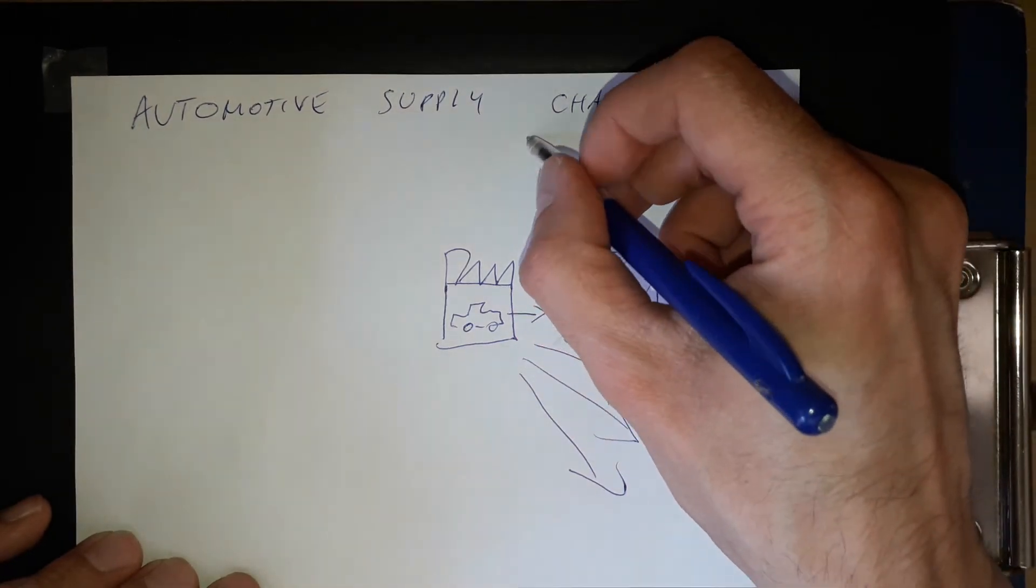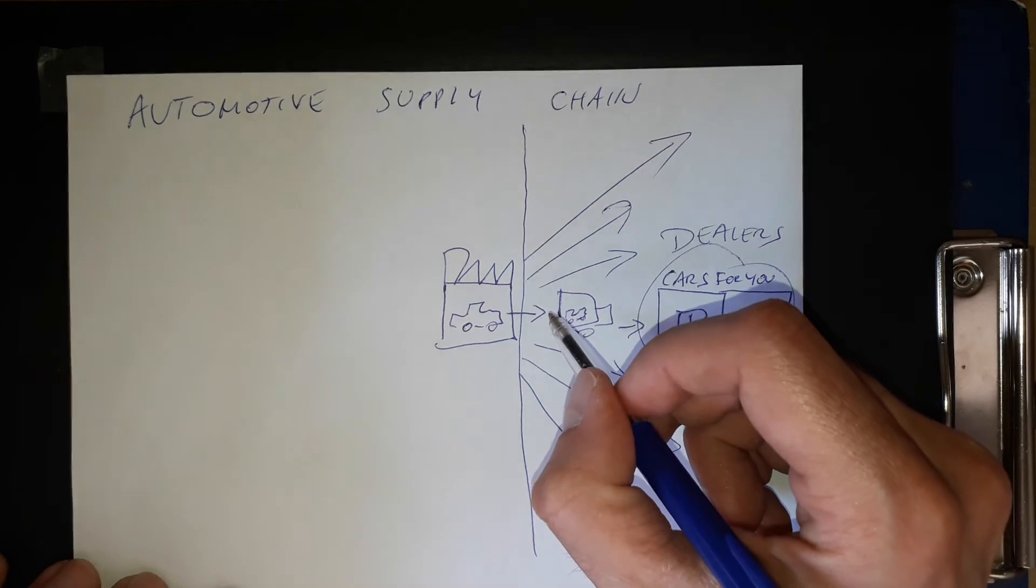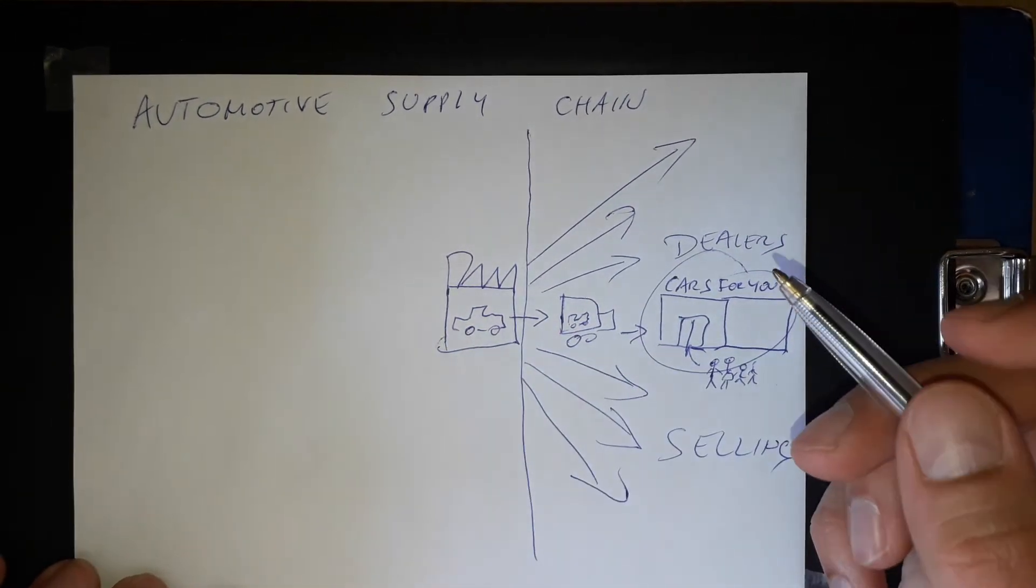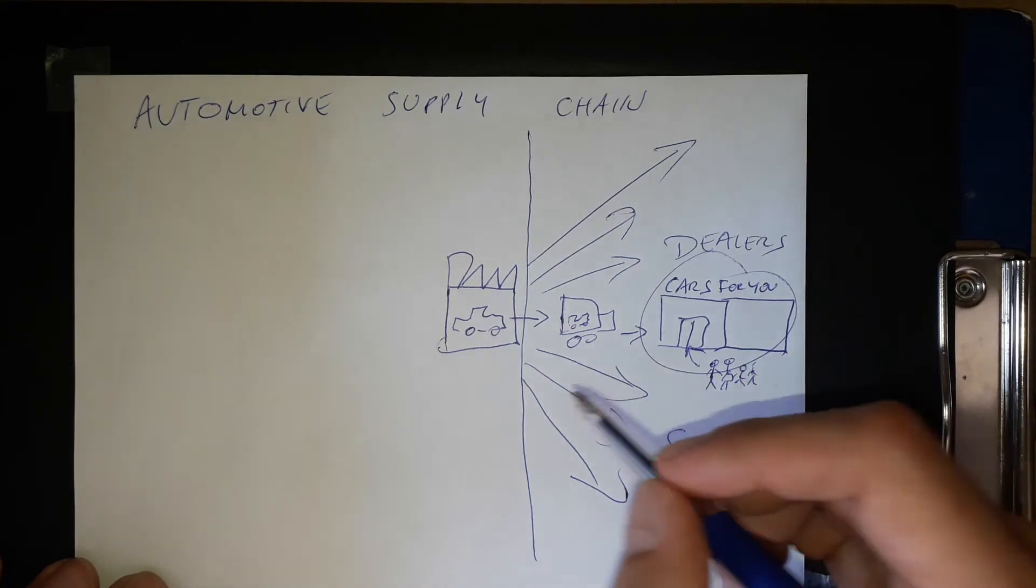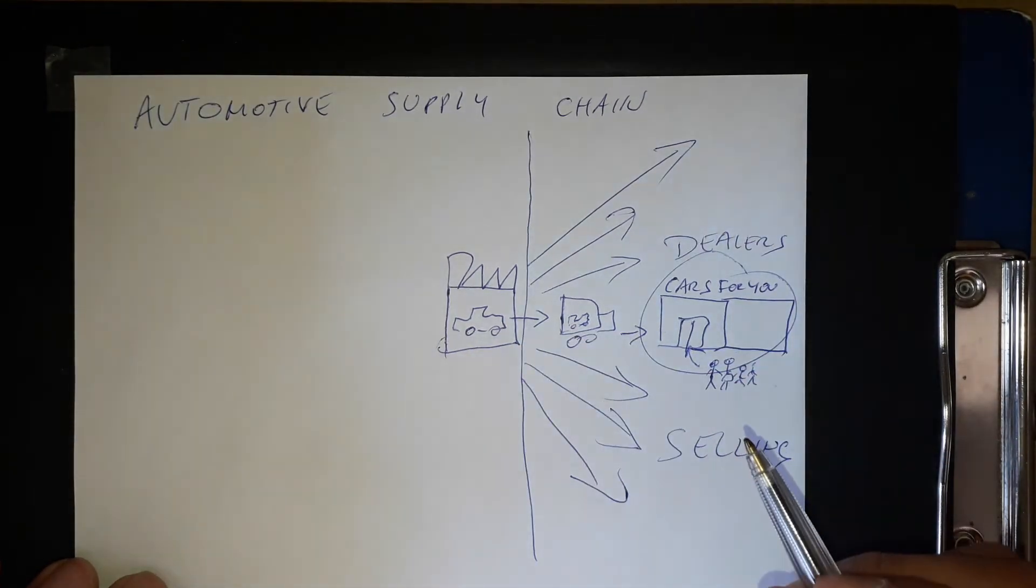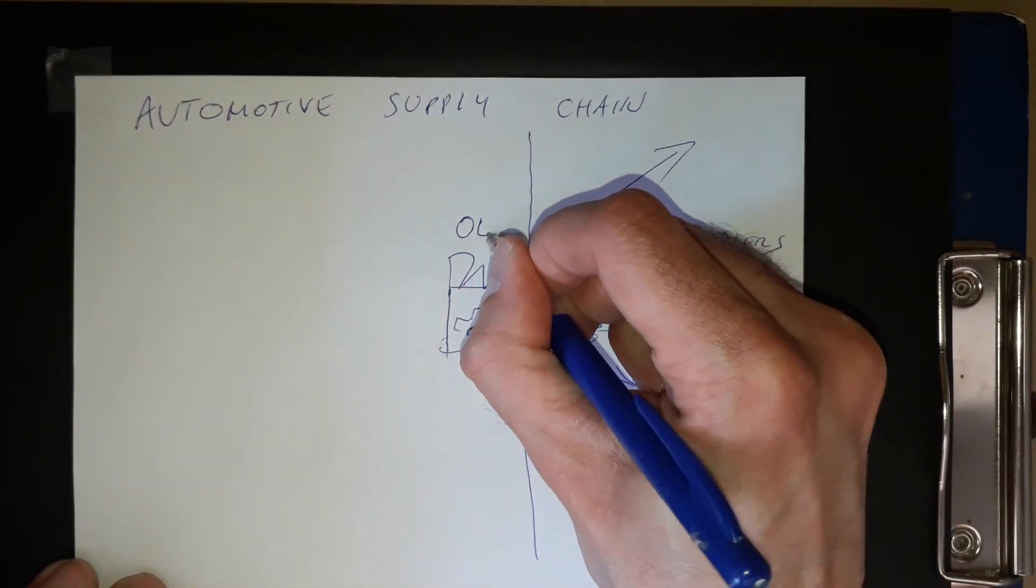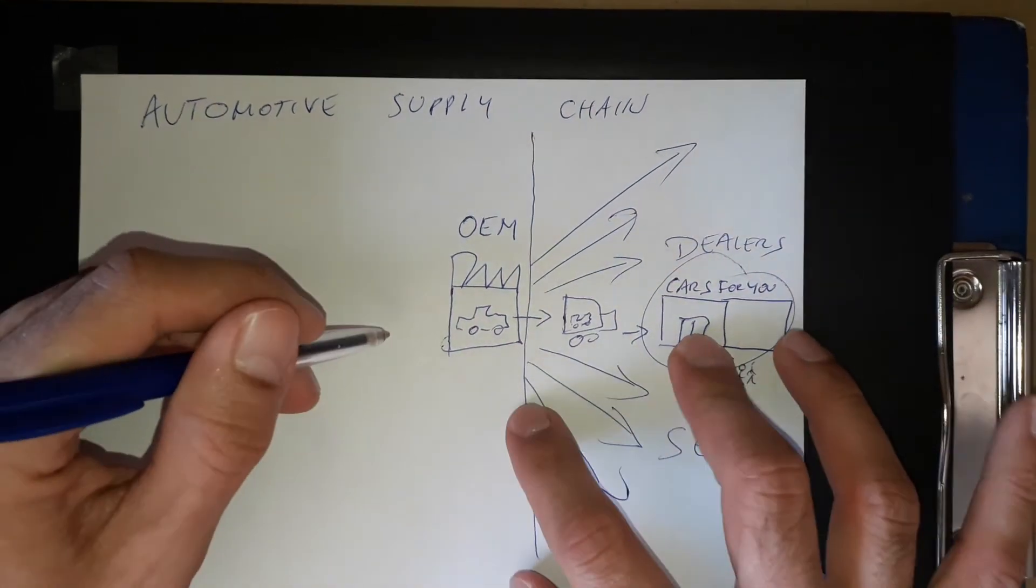However, the supply chain starts before shipping, so before shipping the ready car to the customers. Which means we have the factory, which is the original equipment manufacturer OEM, and here we have the suppliers.